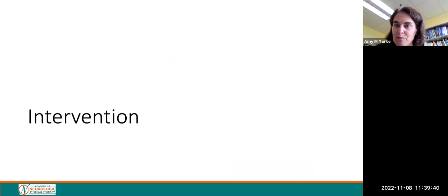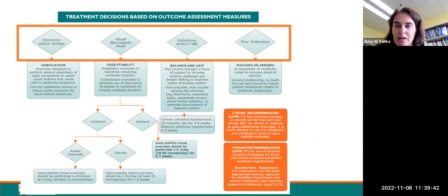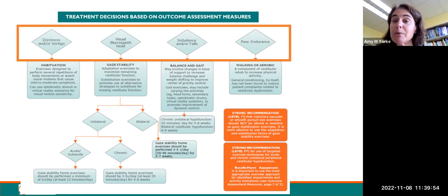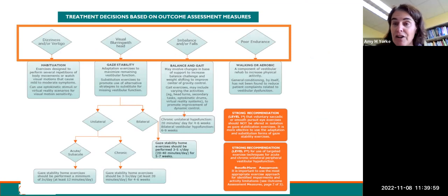Now let's move toward intervention. A physical therapist can use this decision-making algorithm for ensuring implementation of the evidence that aligns with the clinical practice guideline. Vestibular physical therapy commonly falls into four categories: dizziness and vertigo, visual blurring with head movement, imbalance and/or falls, and poor endurance.